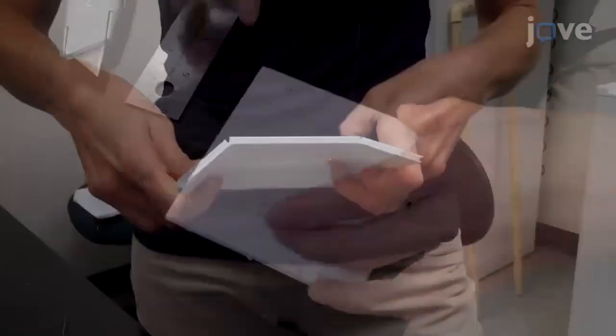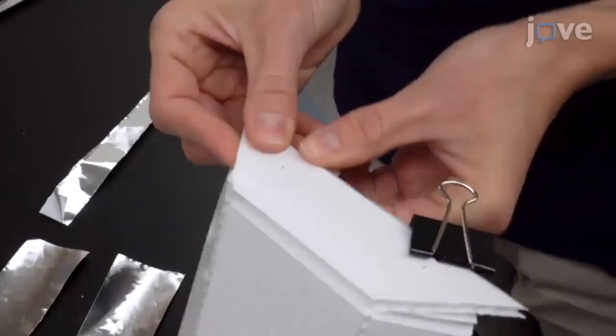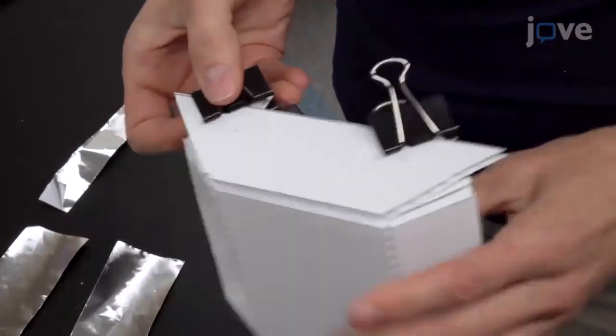Now fold the 15 cm sheet along the scored lines, and tuck the small triangular flaps on the inside of the larger back flap, securing temporarily with binder clips.